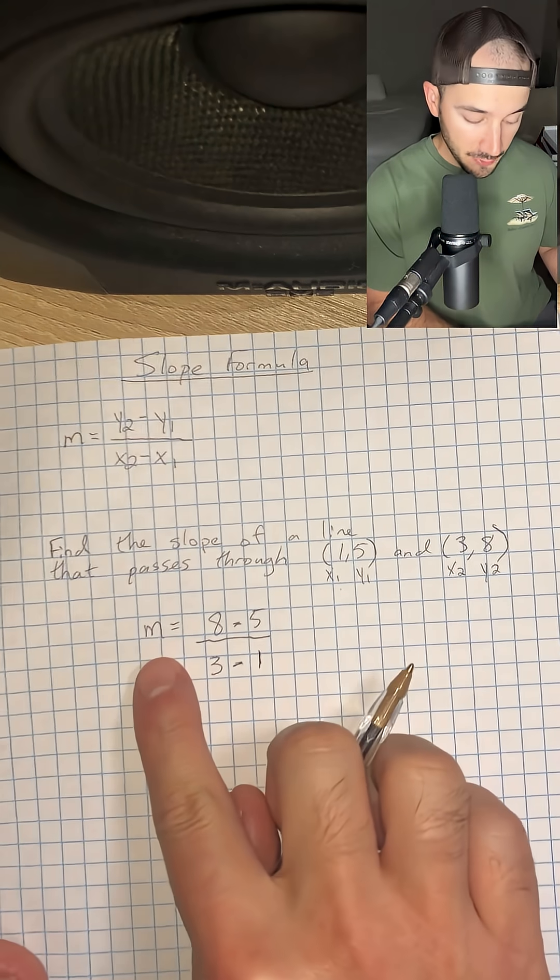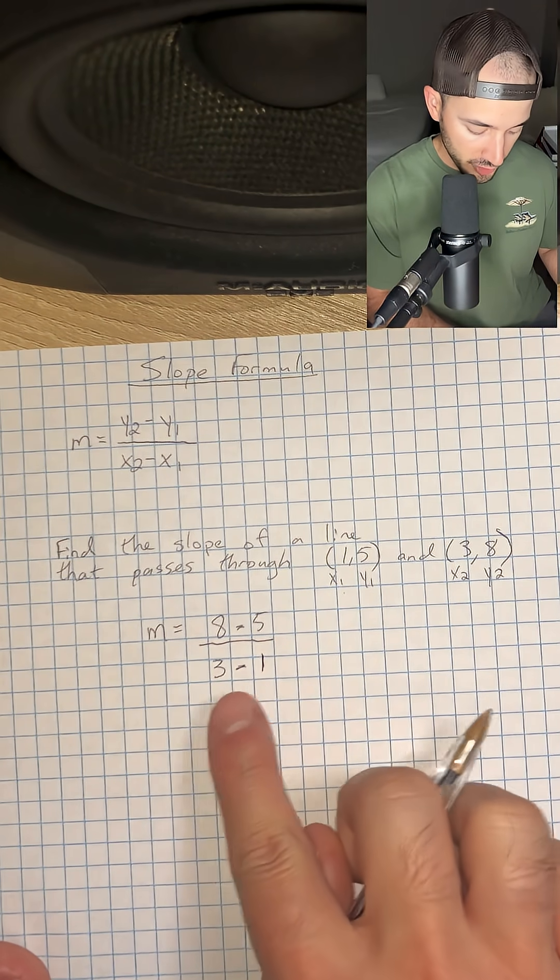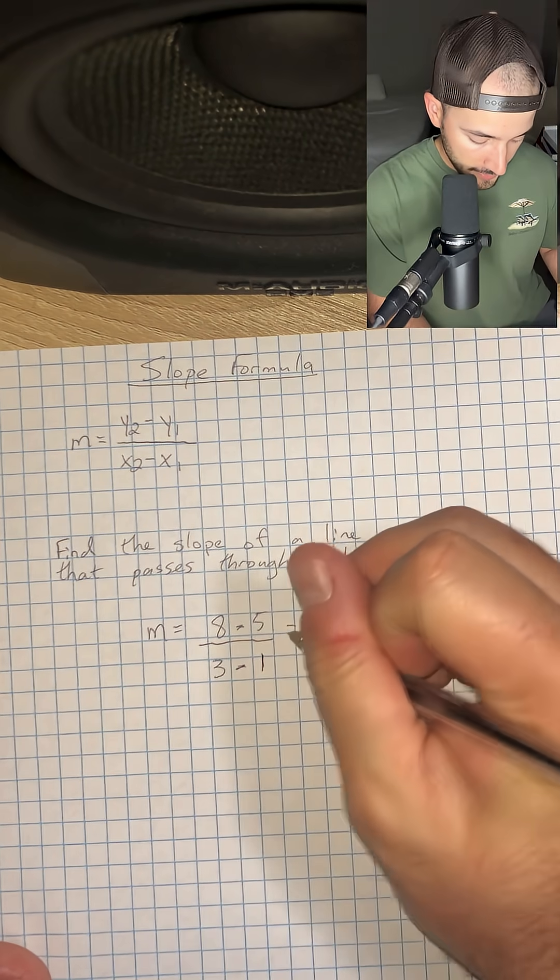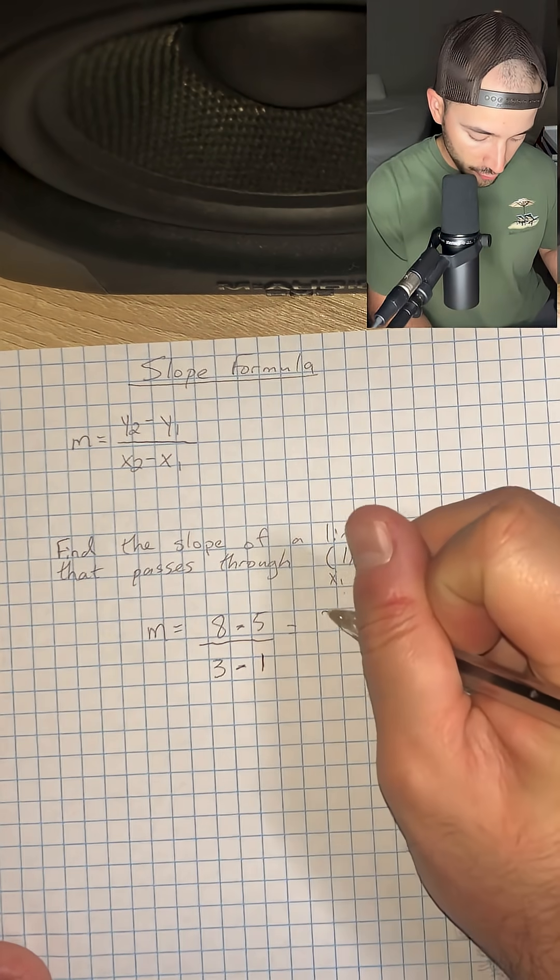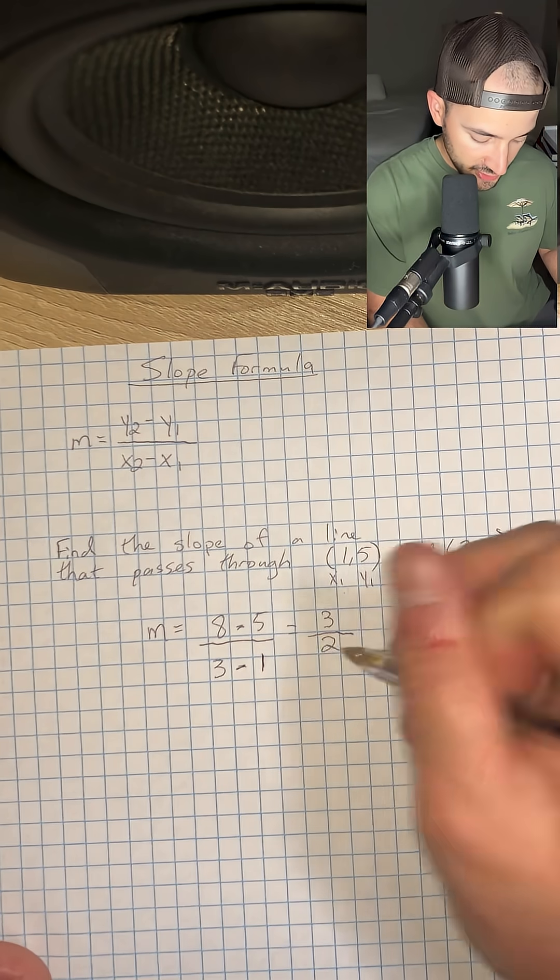Okay, so now we have that the slope is equal to 8 minus 5 over 3 minus 1. Now we just do the math. So 8 minus 5 is 3 over 3 minus 1 is 2.